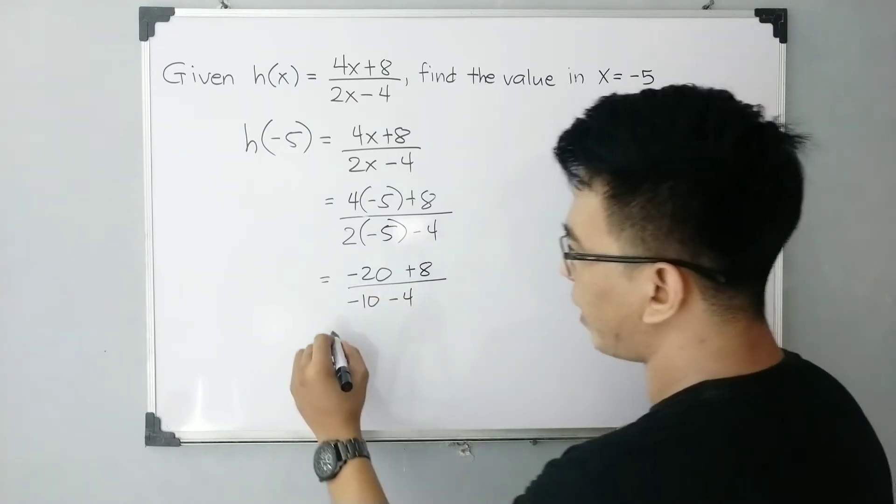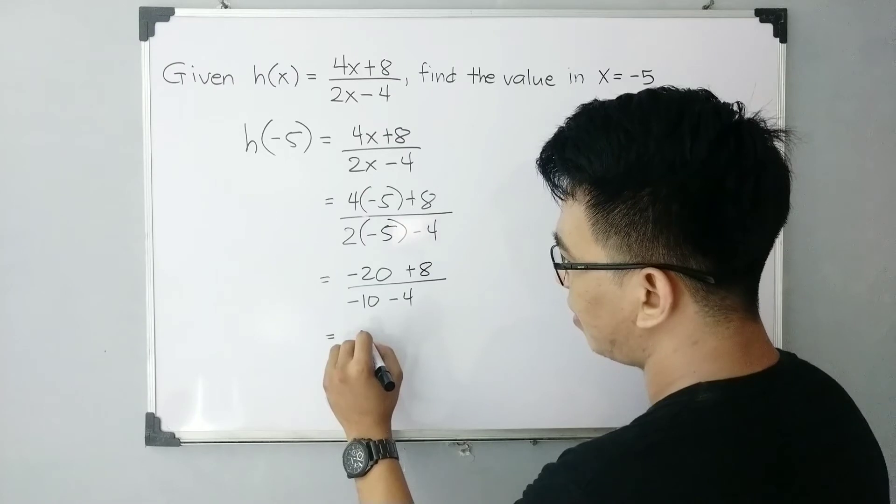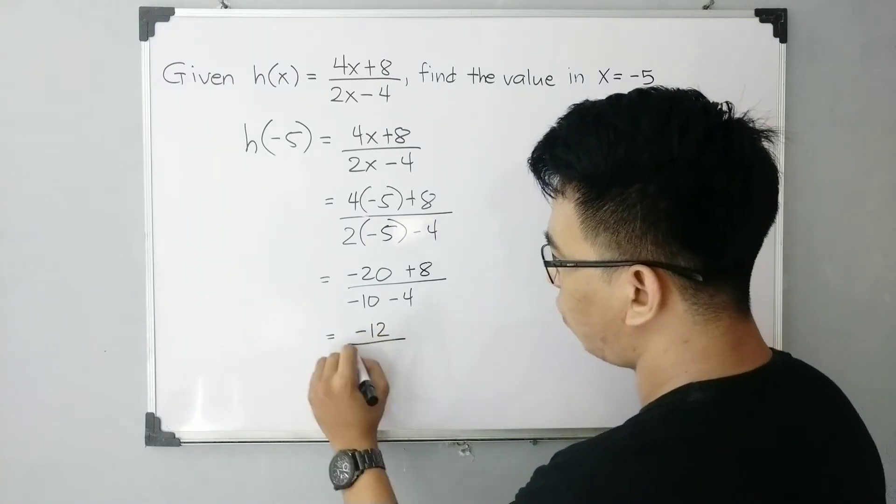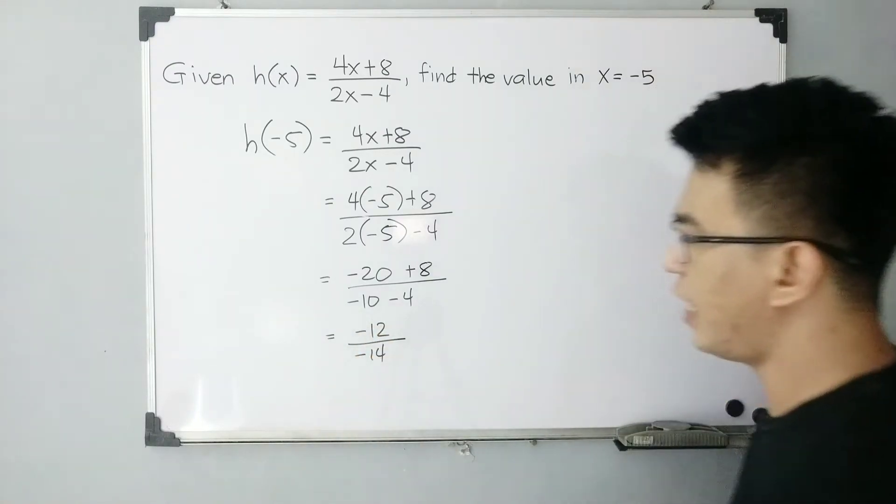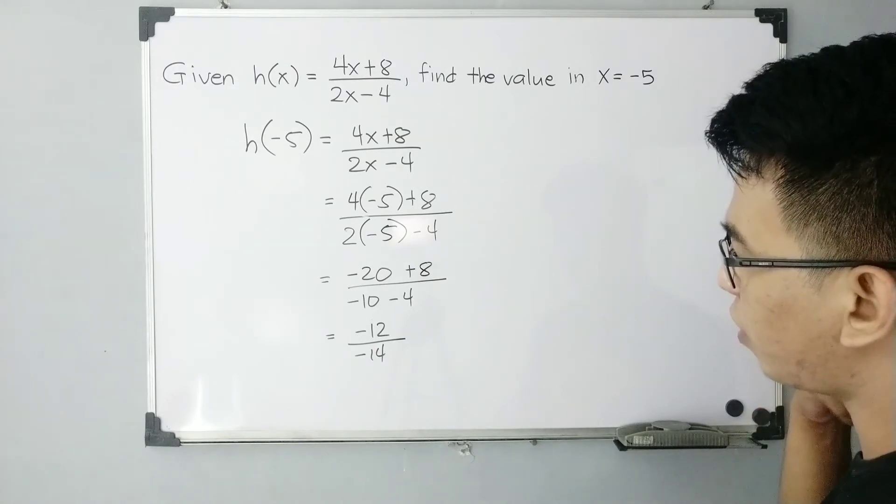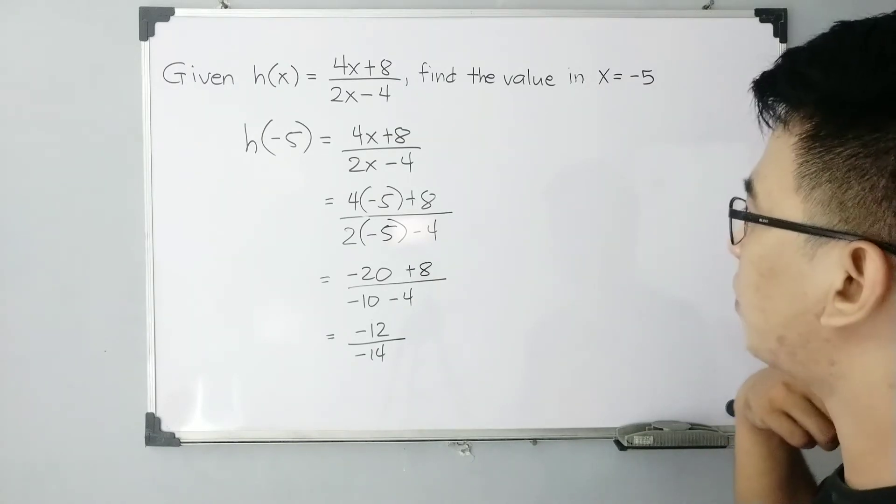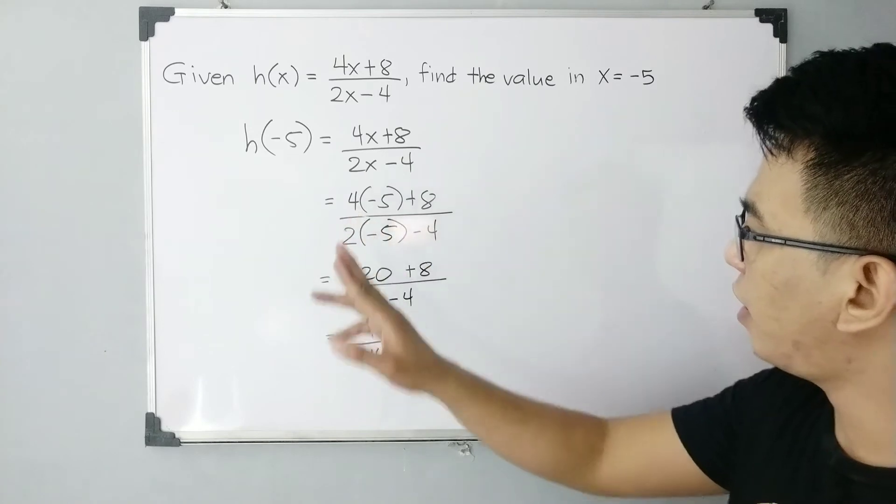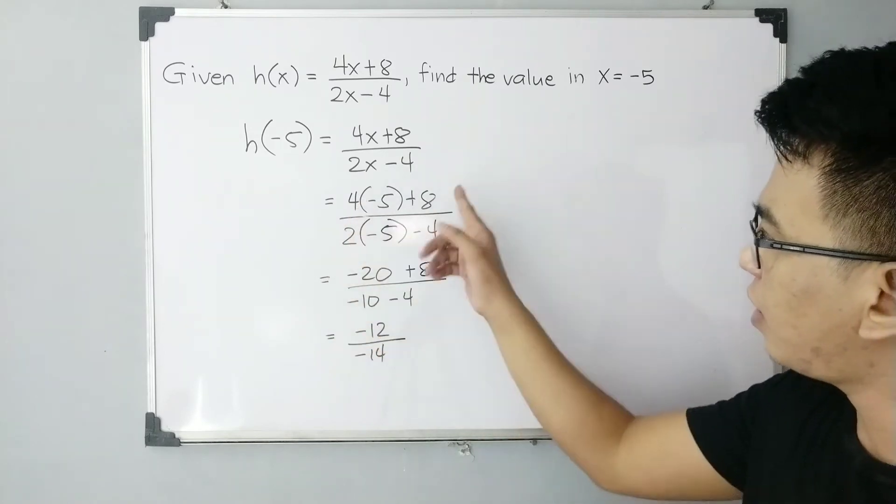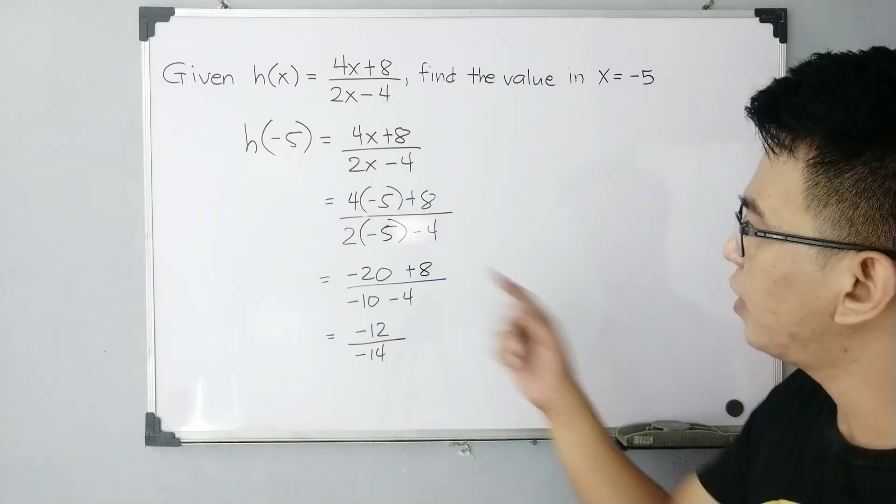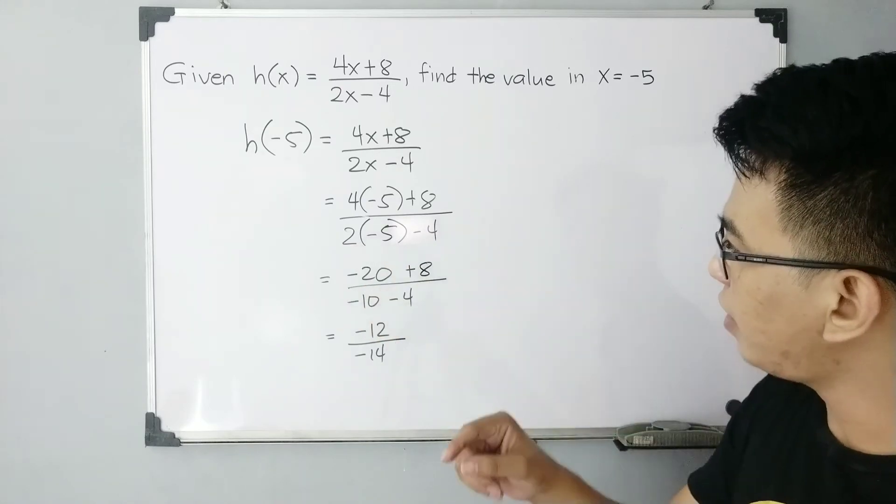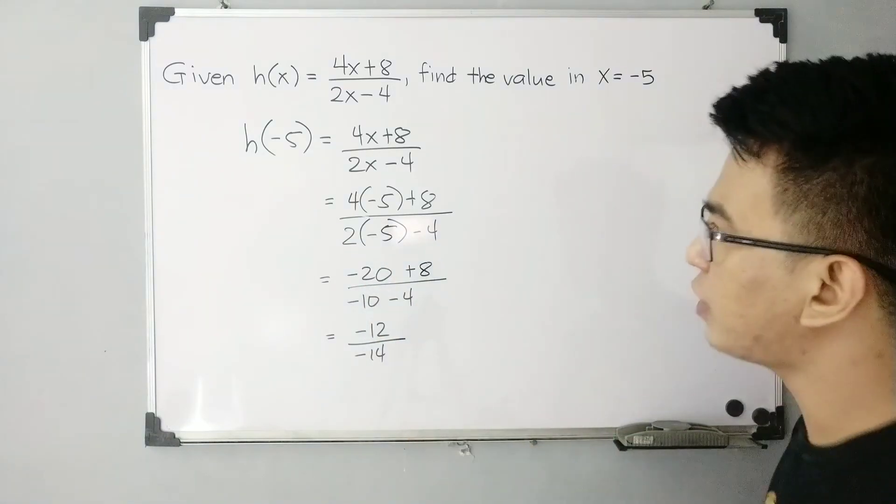And you need to perform the operation. So this is negative 10 minus 4 minus negative 4.